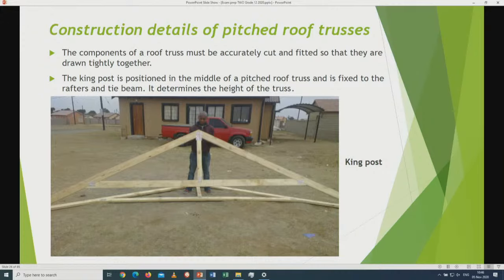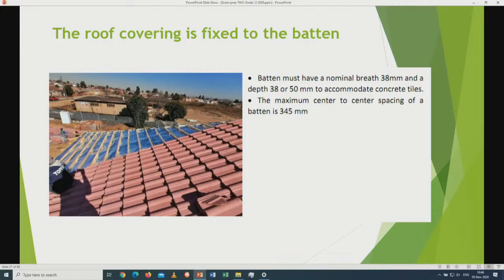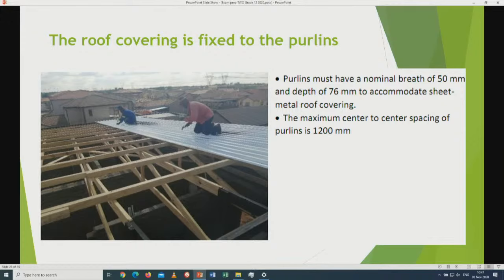The roof covering is fixed to batons. A baton must have a nominal breadth of 38 by 38 mm and a depth of 38 or 50 mm to accommodate concrete tile. The maximum center-to-center spacing of a baton is 345 mm. We can see in the picture batons fixed onto the rafter with roof tile being fixed on top. The roof covering is also fixed to pilings. Pilings must have a nominal breadth of 50 mm and a depth of 76 mm to accommodate sheet metal roof covering. The maximum center-to-center spacing of pilings is 1,220 mm.